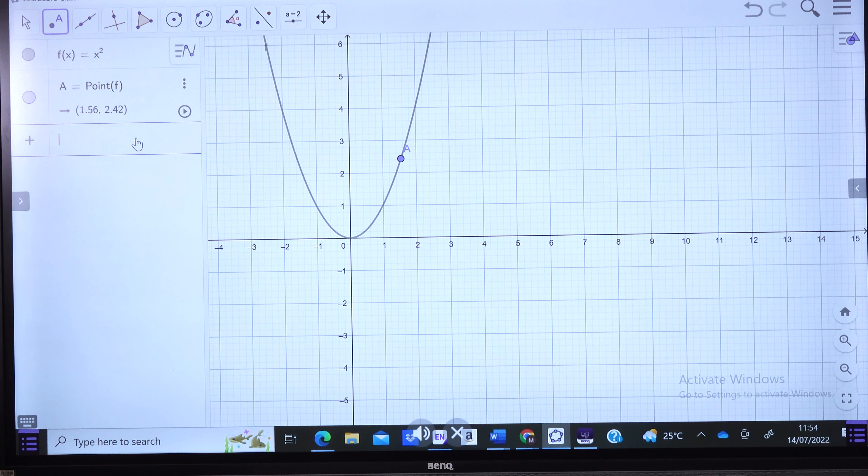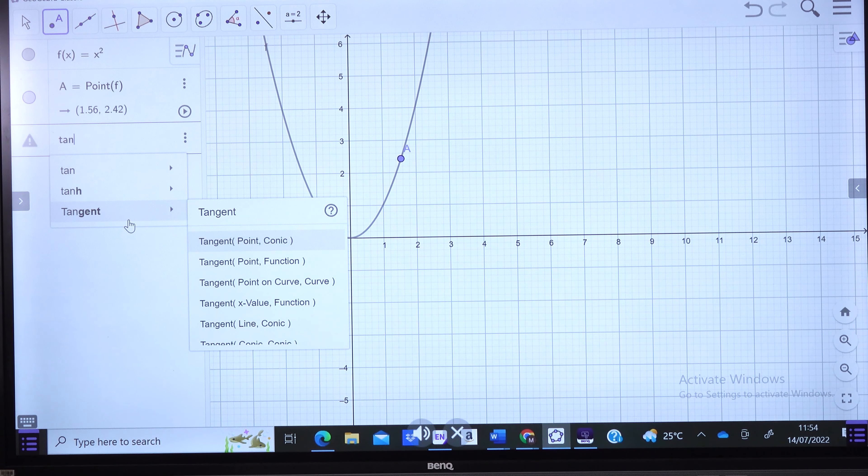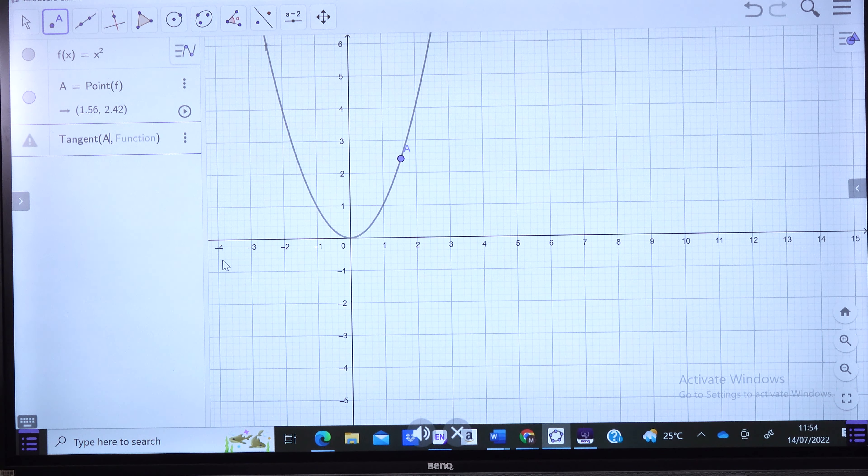Now, this point, we need to get our tangent that passes through it so that it helps us to proceed. So we input the tangent. And in this case, this tangent is going to have the point, which is point A, and the function, which is the original function, and that is function f of x.